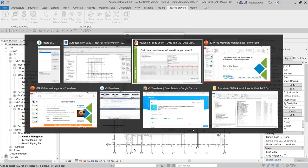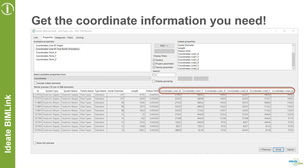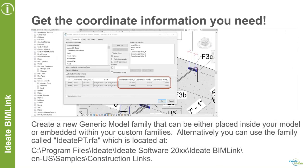There are times when coordinates alone won't give you enough information. That's why we've included a generic model family that's part of ID8 BIMLINK in the construction folder — a generic model point. In this case I highlighted the top of the hangers, those two points, and was able to extract the X, Y, and Z coordinates at the top point of that hanger. Wherever I place that generic model family, I can extract the information.